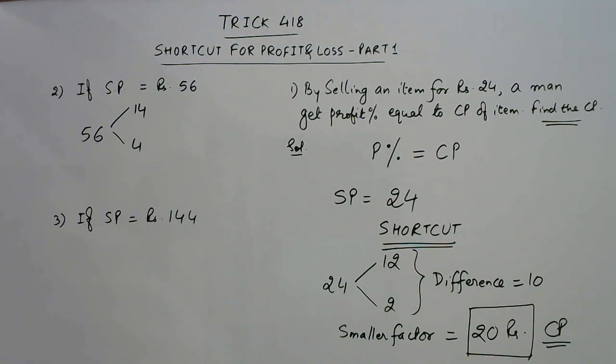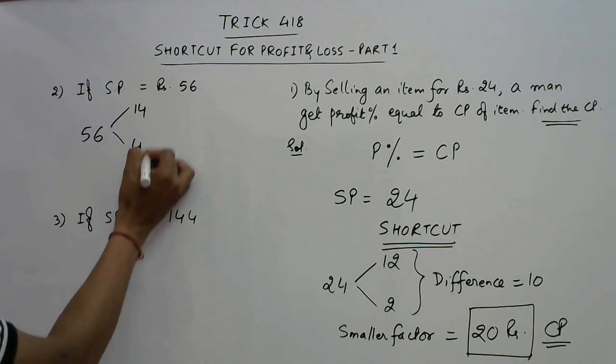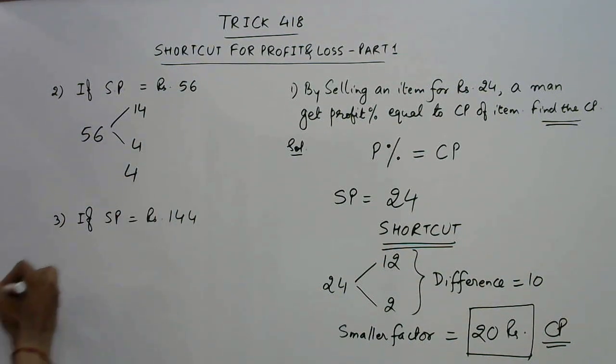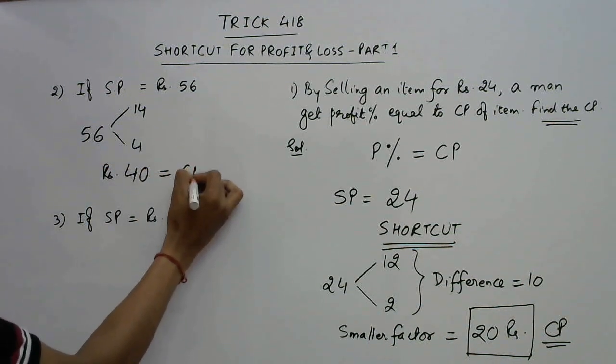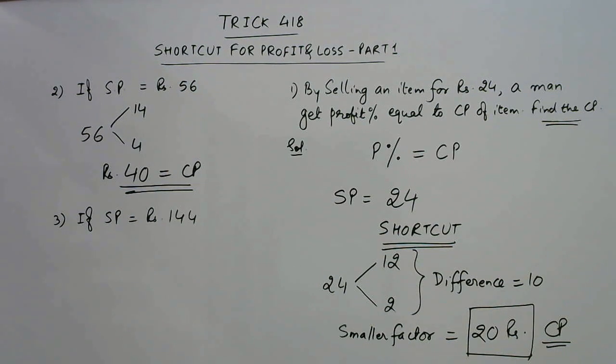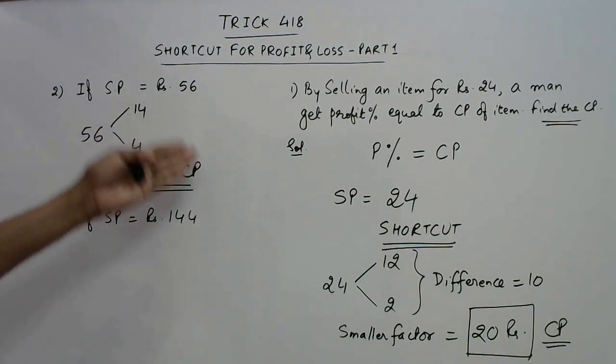This is what we need to find out. Now what is the smaller factor? 4, put a 0, so rupees 40 is the cost price of the item. So how much time will you take doing this? Only time which you will consume is to find these two factors.